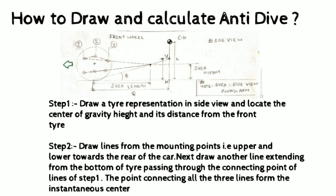The height of the instantaneous center is called the SVSA height. Now extend the lines made from the mounting points of the upper and lower wishbones, as well as the line extending from the contact patch forming the instantaneous center, towards the line of the center of gravity — represented by height H — at point P.